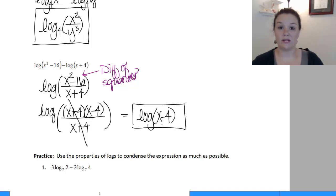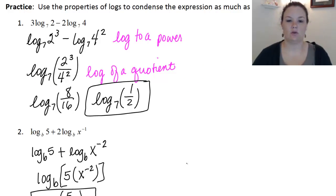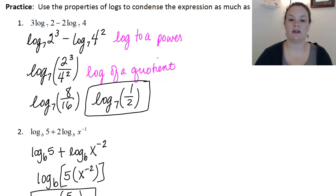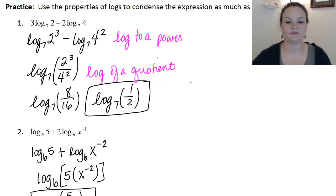So there are three for you to try. On this first practice problem, the first thing I do is put my coefficients back up into the exponent: my 3 goes up to make 2 to the 3rd power, and my 2 goes up to make 4 to the 2nd power. Then once I do that, I can combine everything into one log term. Since I have a subtraction that condenses into a division, the negative term goes to the bottom — 2 cubed on top, 4 squared on bottom. That gives me 8 over 16, which reduces to 1 half. So I end up with log base 7 of 1 half.